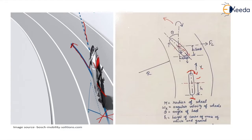Now if it takes a turn about a track whose radius of curvature is denoted by capital R, this wheel gets inclined towards the inner side. The inclination — the angle it makes with the vertical — we say this angle is theta.